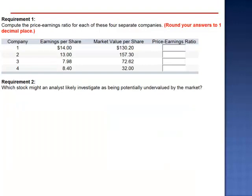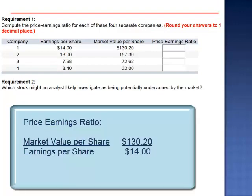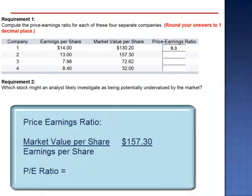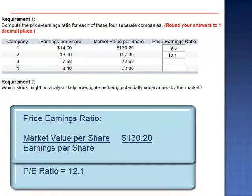$130.20 per share divided by $14 per share is a price-earnings ratio of 9.3 for company one. Company two: $157.30 divided by $13 per share is a price-earnings ratio of 12.1.